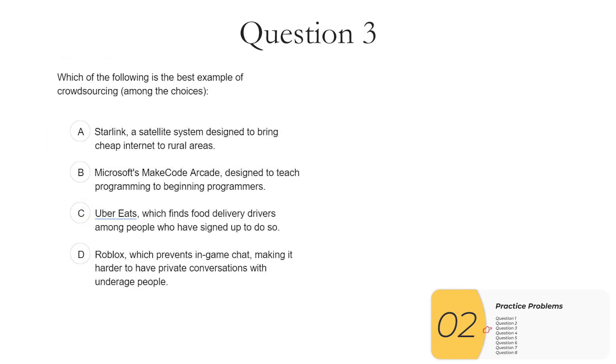Question three, which of the following is the best example of crowdsourcing? A, Starlink designed to bring cheap internet to rural areas. No, this is an example of helping the digital divide. So it's not it. B, Microsoft's MakeCode arcade designed to teach programming. No, this is just an example of education. So it's not it either.